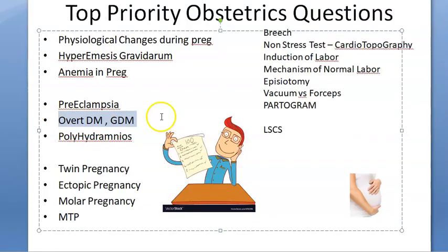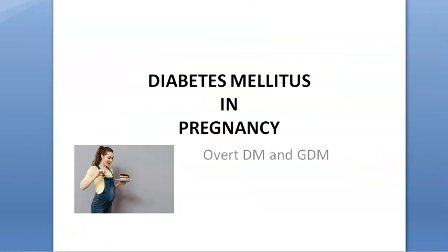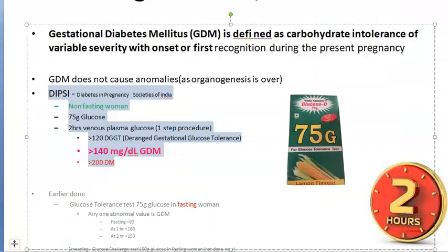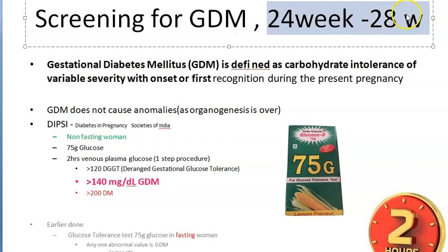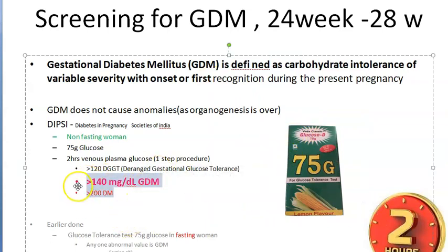Overt diabetes mellitus means she had diabetes even before pregnancy; gestational diabetes mellitus (GDM) is because of pregnancy. Overt DM is more dangerous than GDM. Diagnosis: the DIPSI test is done at 24 to 28 weeks — give 75 g glucose irrespective of fasting status, then check venous plasma glucose after two hours. Greater than 140 mg/dL is GDM; greater than 200 mg/dL is overt diabetes mellitus.